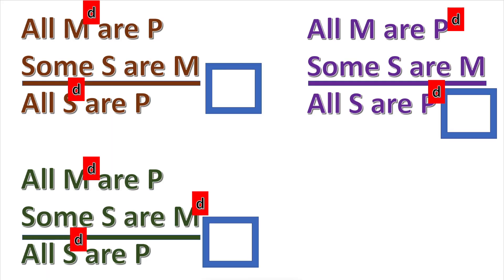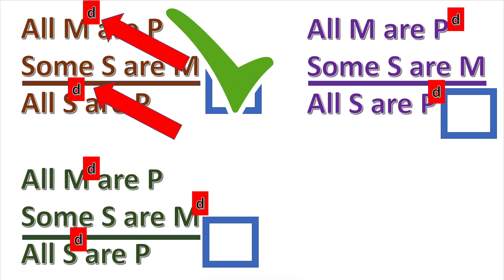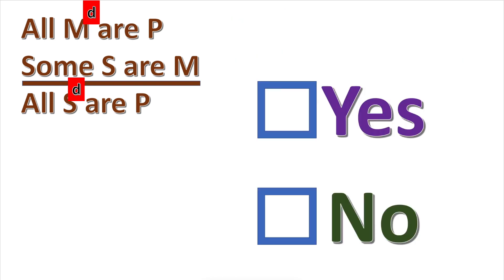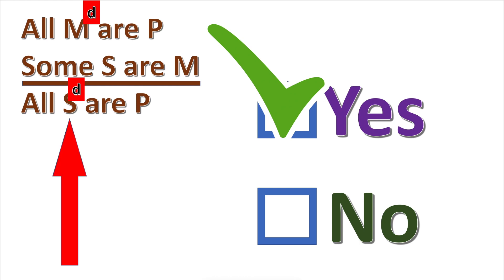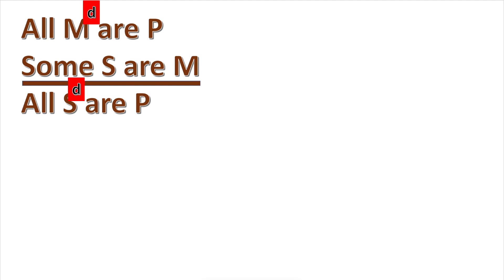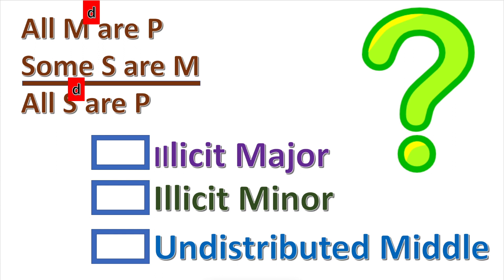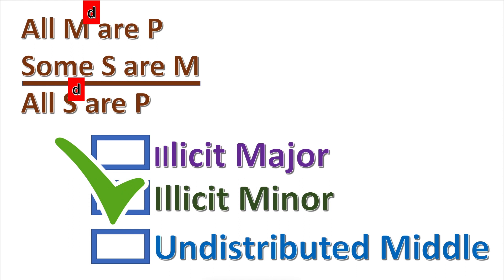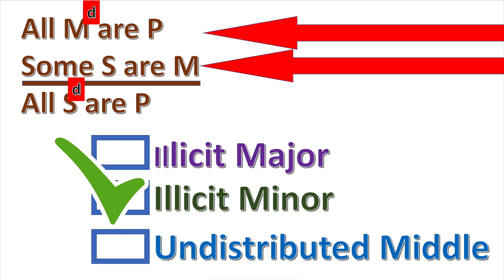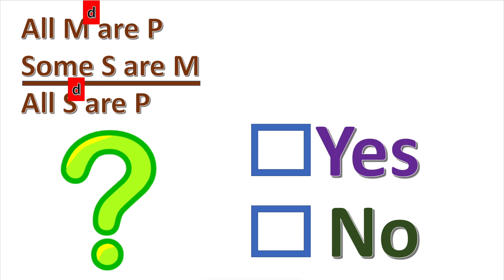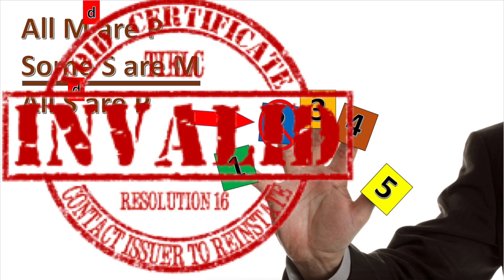Practice problem: choose the correctly marked terms. The distributed terms are correctly marked. Is there a term distributed in the conclusion but not in the premise? The subject term is distributed in the conclusion but not in the premises. Since this syllogism breaks rule two, the fallacy of illicit minor is committed, because the term distributed in the conclusion but not the premises is the minor term. The syllogism is not valid.